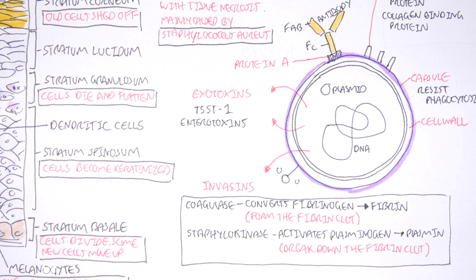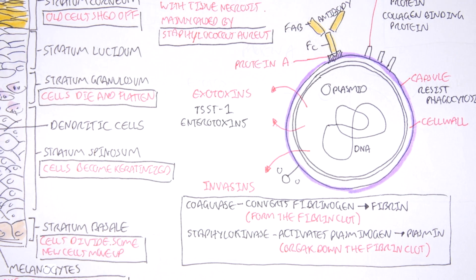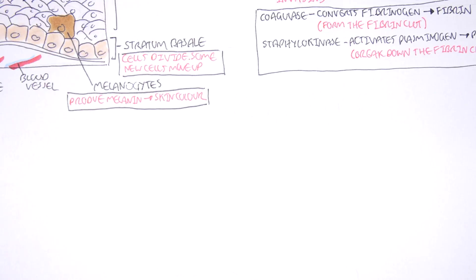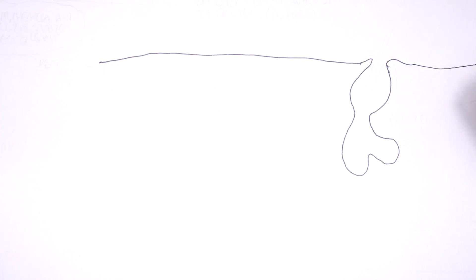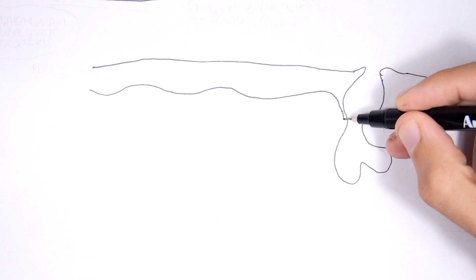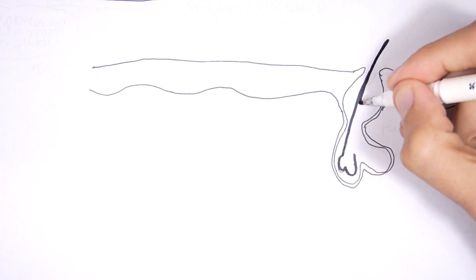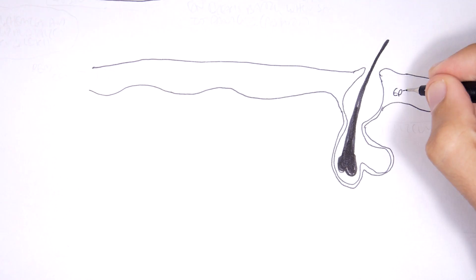So now that we know a little bit about Staphylococcus aureus and its enzymes and what sort of structures it has that allow it to resist phagocytosis, hide and stuff like that, let's look at how it forms an abscess. So here we're looking at the section of our skin, here is the hair follicle, the layers of the skin, epidermis and the dermis.